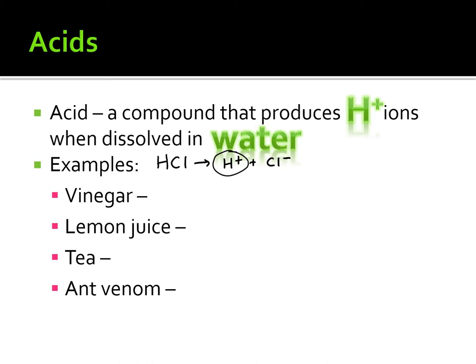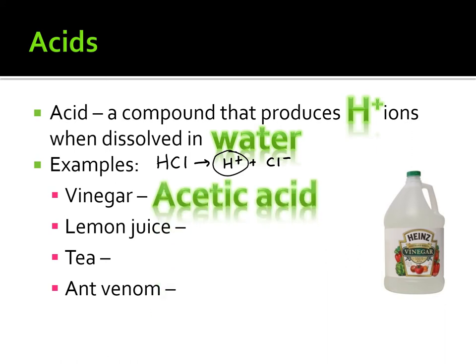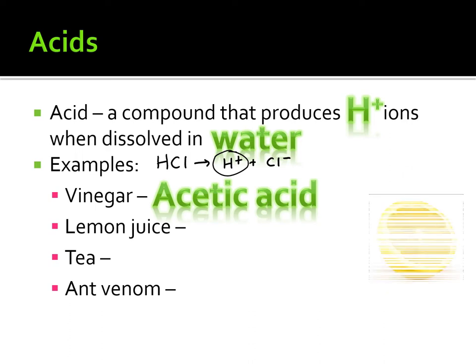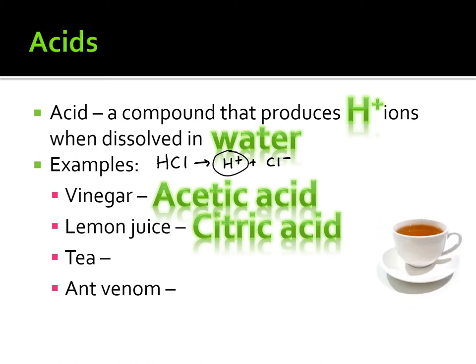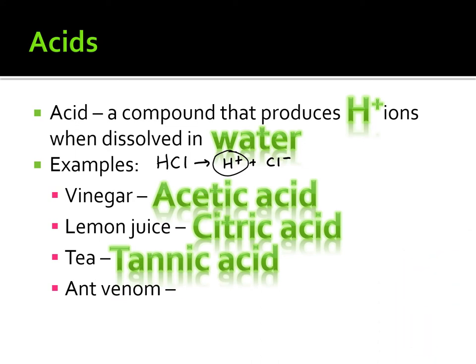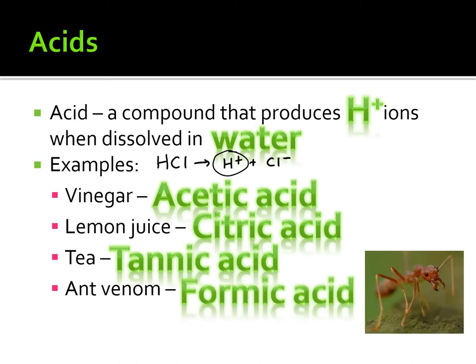Examples of acids include vinegar, which is simply acetic acid. Another example is lemon juice, which is citric acid. Tea is considered to be tannic acid. And last but not least, we have ant venom, which is formic acid. I'm not recommending you write these down due to spacing, but I wanted you to know some examples.